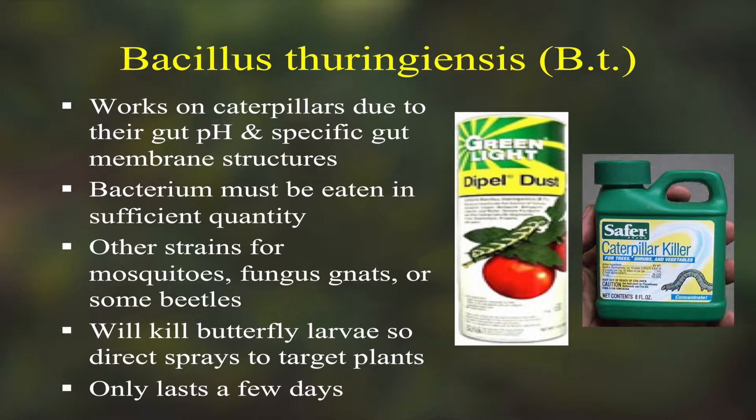BT — many things can eat it without being affected, but caterpillars can't because of the pH of their intestinal tract; it poisons them. Most BT we buy is for caterpillars, though there are strains for mosquito larvae, fungus gnats, and some leaf-feeding beetles. Remember that BT also kills butterfly larvae — don't spray it on your milkweed because of monarch butterflies or on your passion vine because of the Gulf fritillary. Even a relatively safe pesticide must be used wisely, not indiscriminately. BT only lasts a few days, unlike synthetic products like Sevin dust.